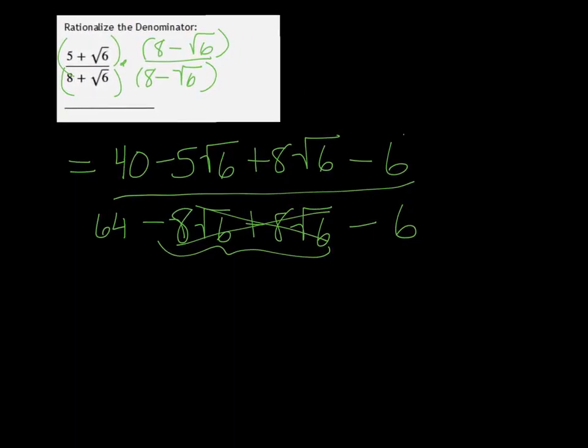For our next step, we're going to combine like terms. 40 minus 6 is 34, and then we have plus 3 root 6 because minus 5 plus 8 is 3, and 64 minus 6 is 58.